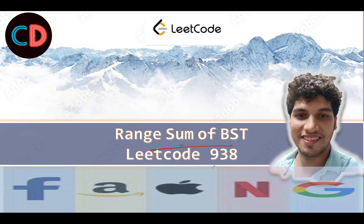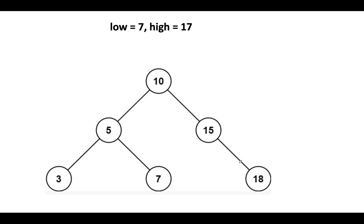Range sum of a binary search tree, LeetCode 938. It's an easy level question on LeetCode and I also feel the same. So let's deep dive into the algorithm. Let's hypothetically assume that the low value is given to us as 7 and high value is given to us as 17, and let's start the iteration.